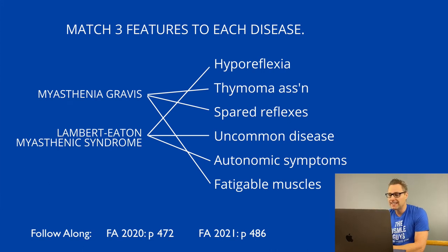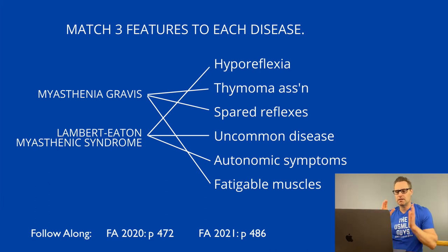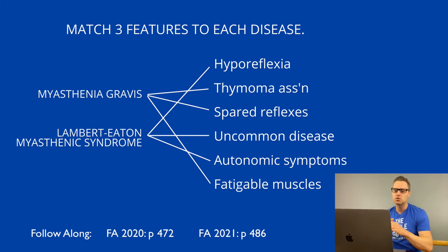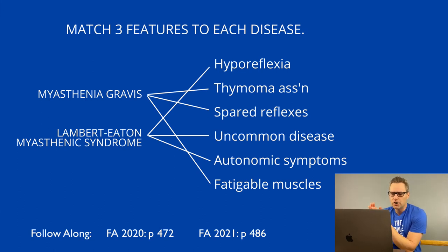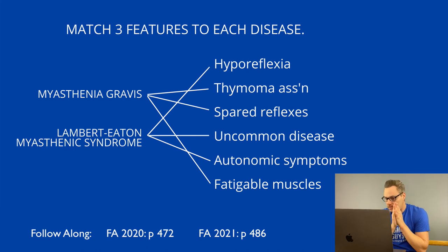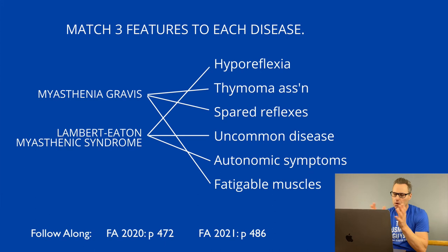An important distinguishing factor: in MG, the problem worsens with muscle use, while in Lambert-Eaton it tends to improve with muscle use — exact opposites. Associations are also commonly tested: in myasthenia gravis, an important association is the presence of a thymoma; in Lambert-Eaton, it's small cell lung cancer. Finally, administering an AChE inhibitor will reverse symptoms in MG, but in Lambert-Eaton it will have no effect or a very minimal effect.